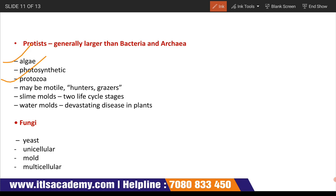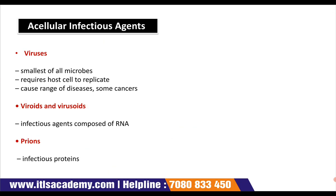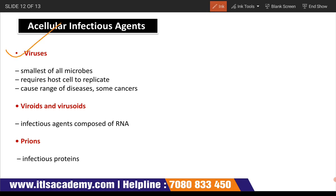Fungi include yeast, which are unicellular, and molds, which are multicellular. Unicellular means only one cell is present, whereas multicellular means many cells are present. Acellular infectious agents include viruses, which are the smallest of all microbes and require a host cell to replicate. Replicate means divide.